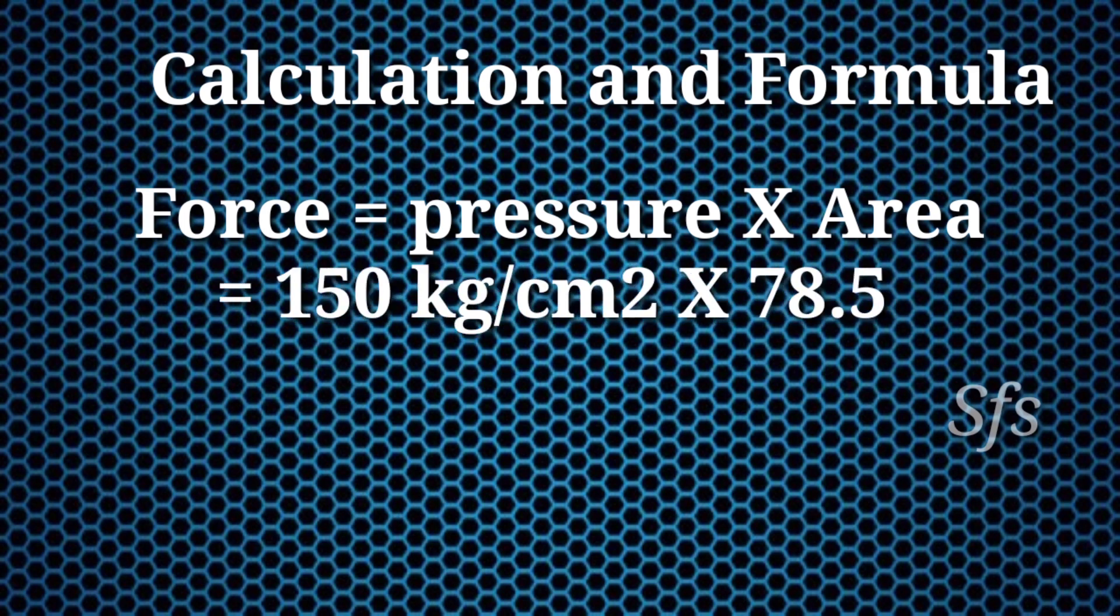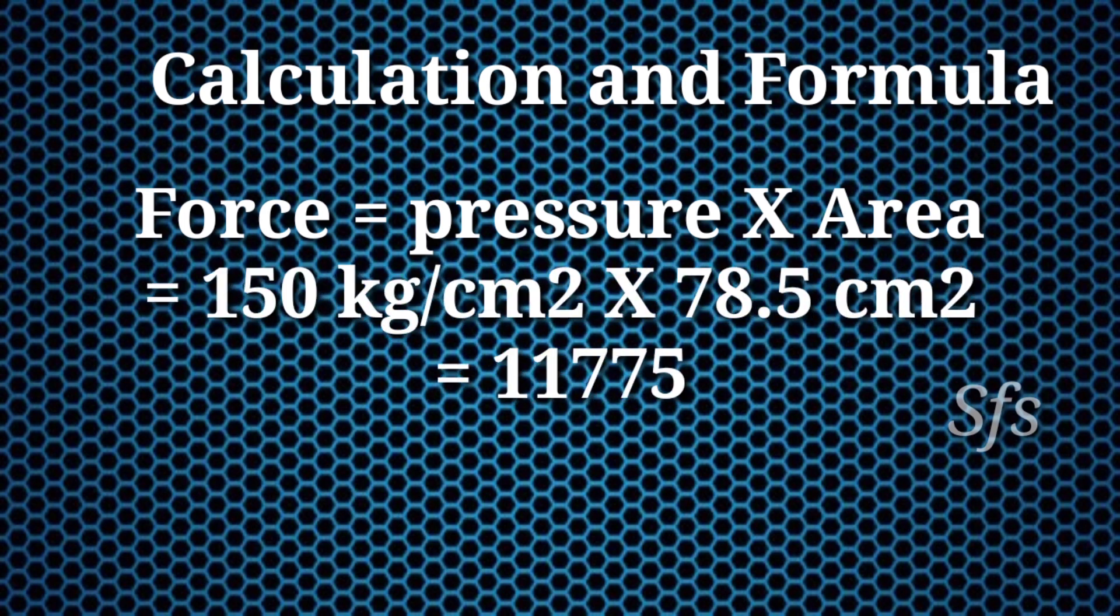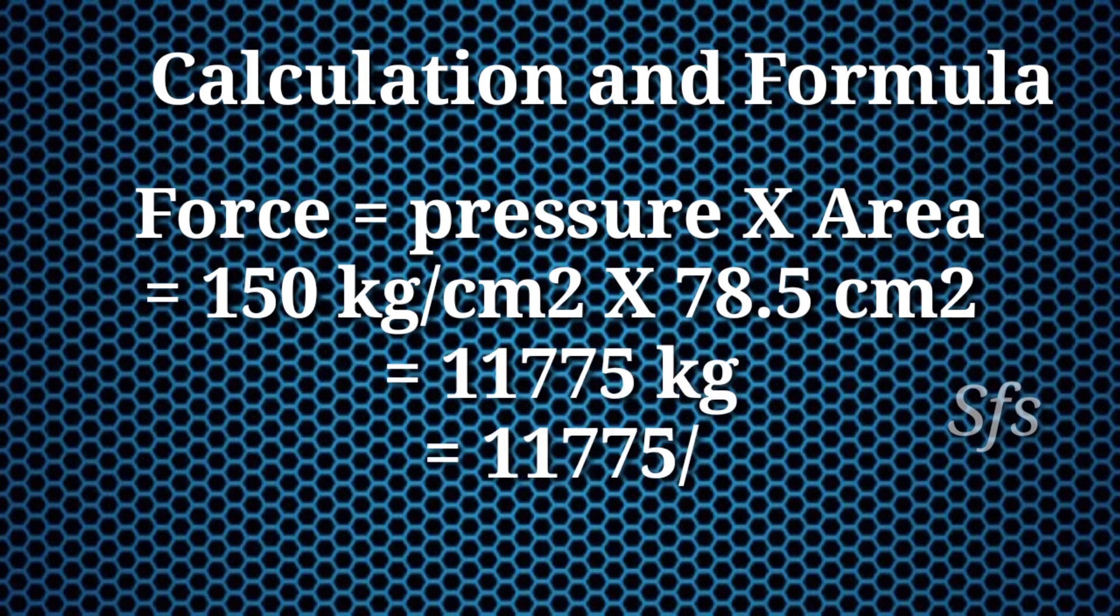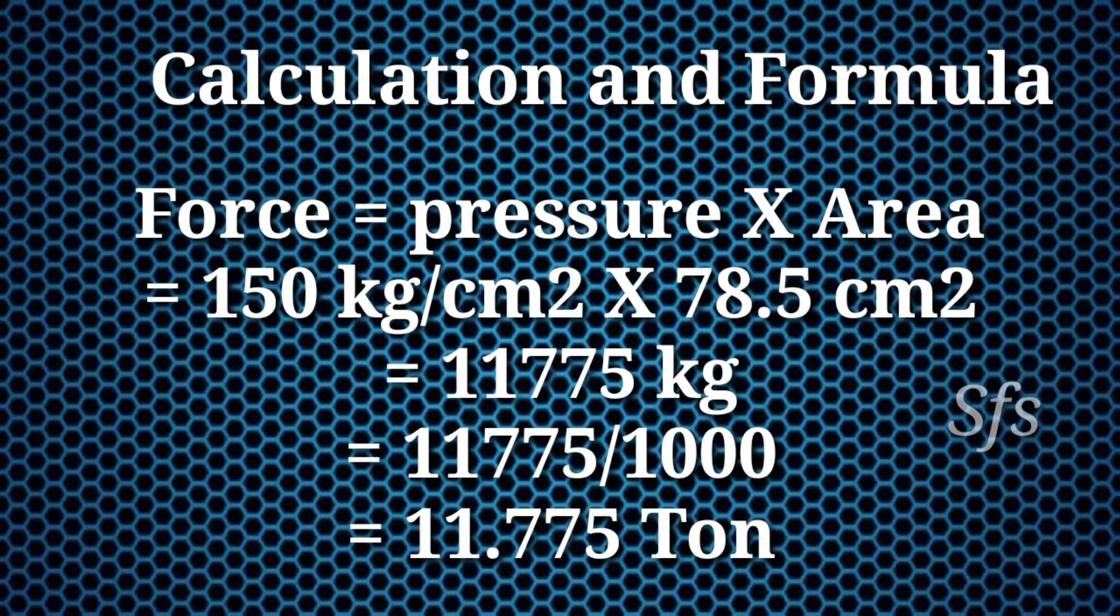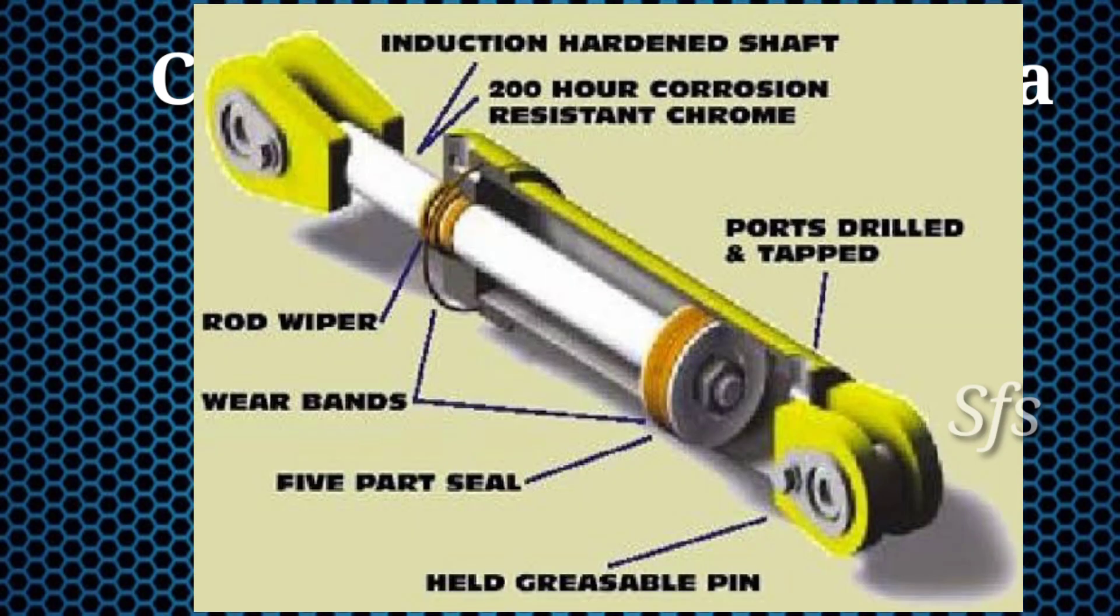Pressure is 150 kg per centimeter square and area is 78.5 centimeter square. By multiplying both, we get answer 11,775 kg. Converting to tons, we divide by 1000, getting 11.775 tons. This means a hydraulic cylinder with diameter 100 mm is capable to lift a load of 11.775 tons.